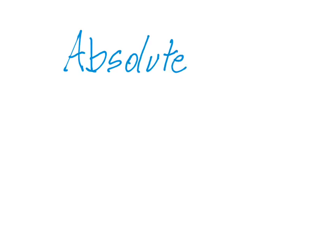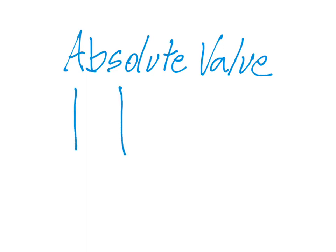Today we're going to talk about absolute value. Absolute value means the distance from zero — it's really measuring a distance. We write the absolute value with things called absolute value bars.